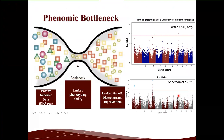One reason we're looking at phenotypes is the issue of phenomic bottlenecking, where we have massive accumulated genomic data but can't easily elucidate genetic information leading to improvements for complex quantitative traits like plant height. So we're looking to use phenotypes directly — using indirect selections based on height rather than marker-based selections.